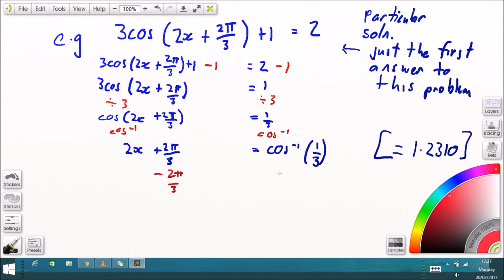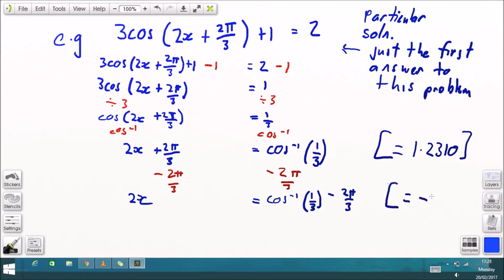So we'll leave both answers there, the cosine version and the decimal place. Now I'm going to have to subtract that whole thing at the end because remember we're trying to rearrange for x. So that's going to be inverse cosine of 1 over 3 minus 2 pi over 3, and that's got a decimal answer which is roughly negative 0.86.